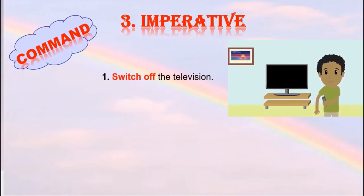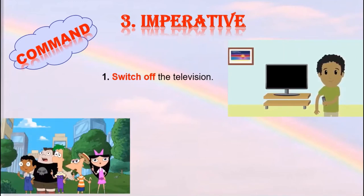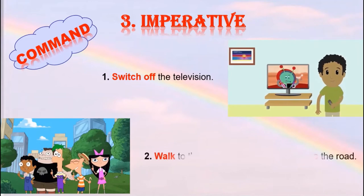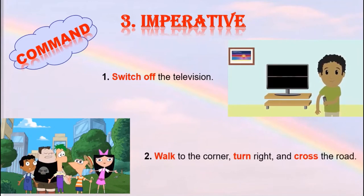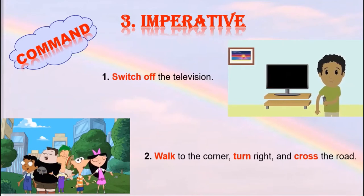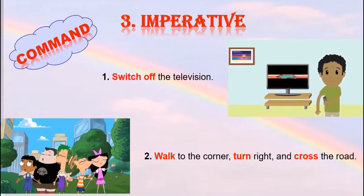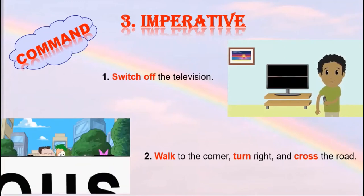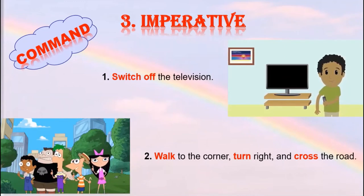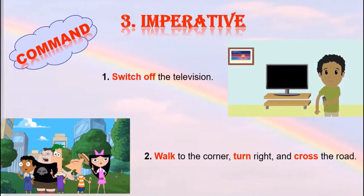Let us look at one more example: 'Walk to the corner, turn right and cross the road.' In this sentence the person is given a command three times — to walk, to turn right and to cross the road. Therefore, this sentence is called an imperative sentence of command.